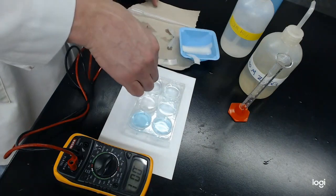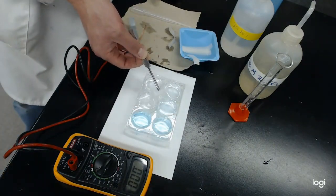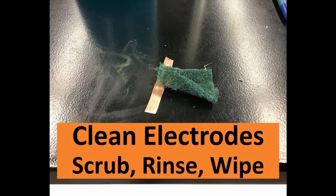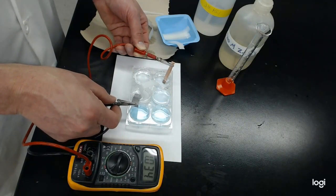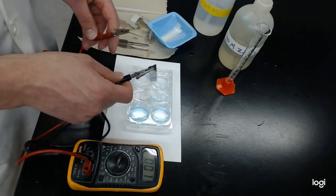Take out your salt bridge when you get done. Put it in your next two wells. Clean the electrodes. Scrub, rinse, and wipe. And put your copper electrode in your copper solution and your zinc to your zinc solution.